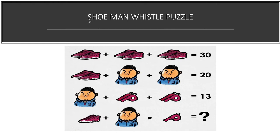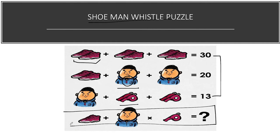Today the puzzle we're going to solve is the shoe, man, whistle puzzle. In this puzzle, as you can see, there are a few items: shoes, a single man wearing a whistle, and one whistle. We have to find out all the item values and then put those values into the final equation to find the answer.